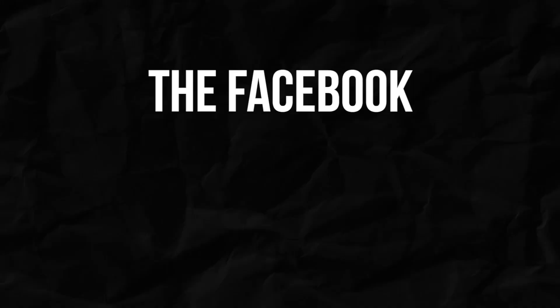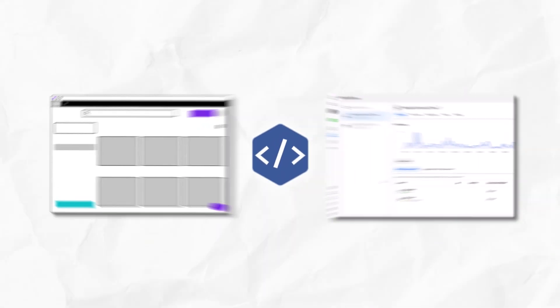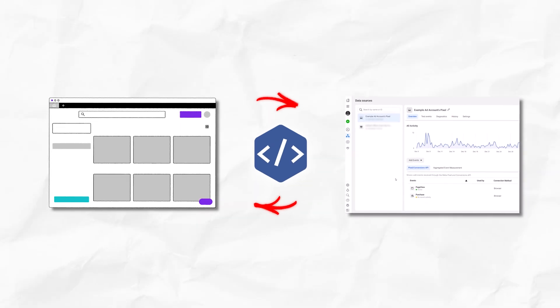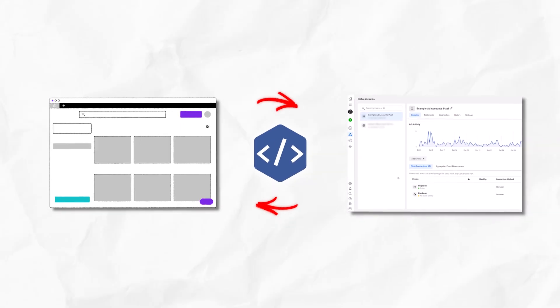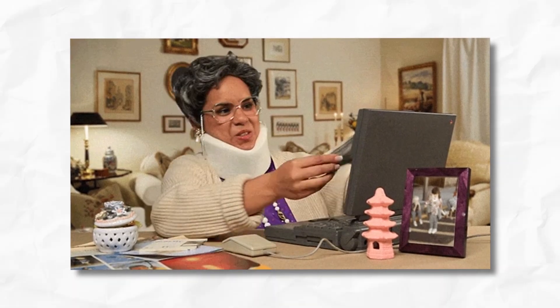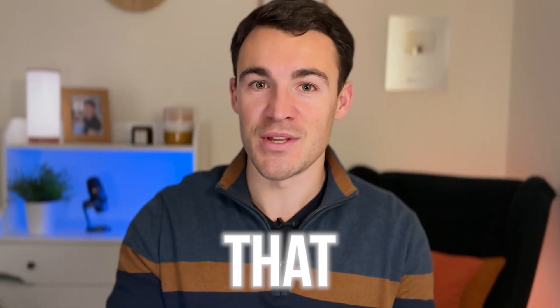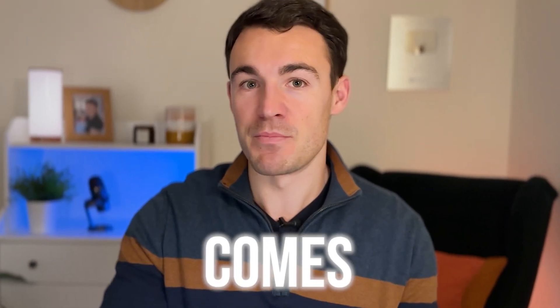To explain what's going on here, I need to first explain the Facebook pixel. For those who aren't familiar, the Facebook pixel is something you want to put on your website, which allows Meta to track the actions that people take on your website after they click on a Facebook ad or Instagram ad. It's really useful for being able to track your results — you can see who went through to your website and made a purchase or who went on to become a lead. It's really important that that data comes back into your Facebook ad account.